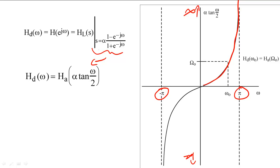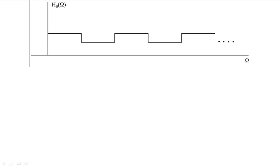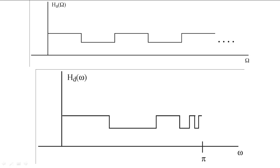For example, suppose that we had a prototype filter whose frequency response looked like this. The digital frequency response would have the same general shape, but the higher frequency steps would get progressively narrower.